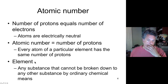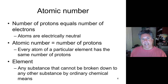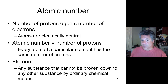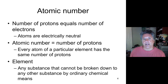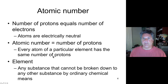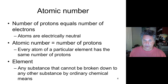We define an element as any substance that can't be broken down into another substance by ordinary chemical means — extraordinary ones can break down elements, but ordinary chemical means cannot. Every element has the same number of protons: all oxygen atoms have eight protons, and all carbon atoms have six protons.